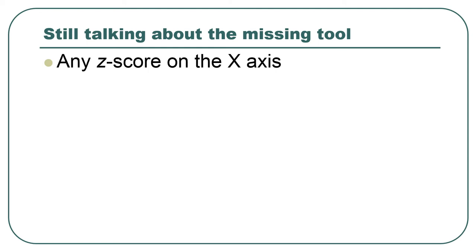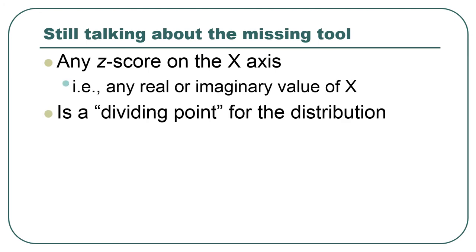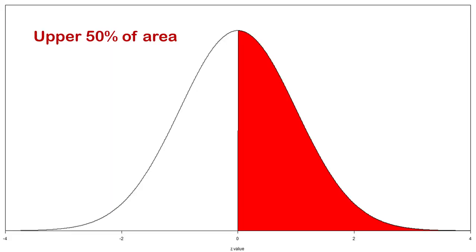Z-scores are the intermediate step for getting that area. Any z-score on the x-axis is a dividing point for the distribution — it divides the distribution vertically. A z-score of zero divides any normal distribution into 50-50 pieces: 50% on one side and 50% on the other side of the distribution.